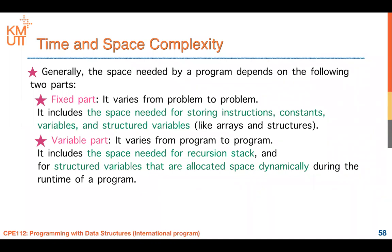We are going to talk about structures and unions later. The second part is the variable part — we have fixed part and variable part. The variable part varies from program to program and includes space needed for recursion steps and structural variables. For example, malloc — do you remember when you want to do dynamic allocation during program execution? In C, we use malloc to allocate new memory. This is what we call the variable part or the dynamic part of space allocation.